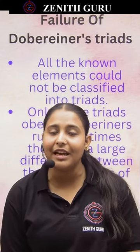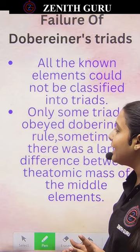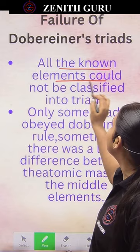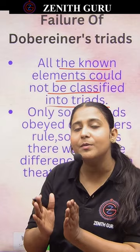We are going to discuss the failure of Döbereiner's Triads. Did they not tell this? Or did they not tell it correctly? We will know about it. All the known elements could not be classified into the triads. Whatever the elements were known at that time, they did not all fit into the triads.